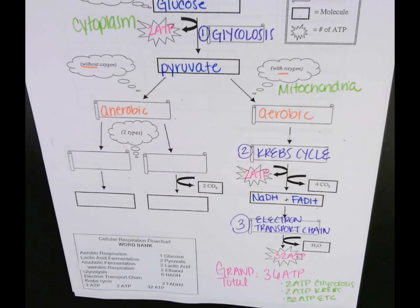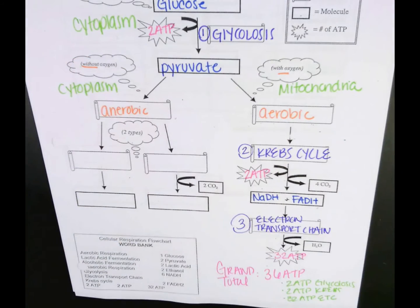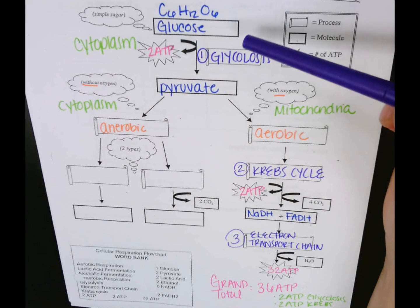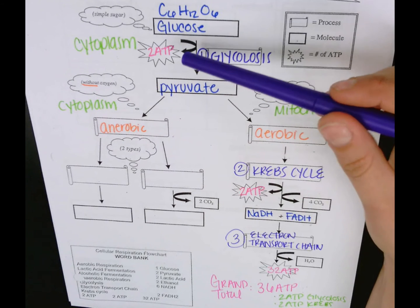Well what happens when we don't have oxygen? When we don't have oxygen we can't move to the mitochondria, so we actually stay in the cytoplasm. There are two different types of fermentation. One of them is lactic acid fermentation, the other one is alcoholic fermentation. So from glycolysis we still start with that glucose, we've broken it down into pyruvate and we've gotten two ATP.